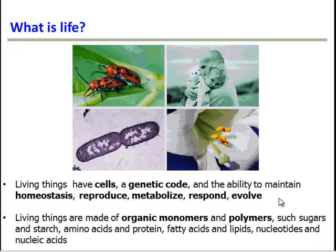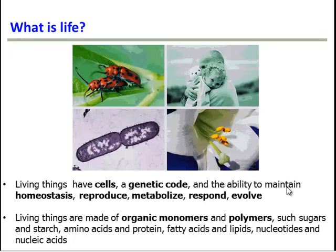Living things are also made of certain chemicals — organic monomers and organic polymers, like sugars and starch, amino acids and protein, fatty acids and lipids, and nucleotides and nucleic acids. Remember that organic means that a chemical contains carbon and hydrogen. And this is one major difference between the composition of living things and non-living things. So as we explore the origin of life, we have to keep in mind that somehow we had to have these building blocks.